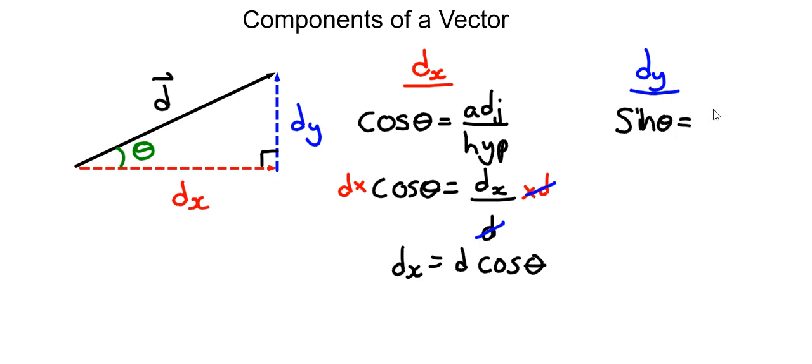So sine theta is equal to opposite over hypotenuse. And so we can rewrite, just like we did over on the other example, we can rewrite the opposite side as DY, and the hypotenuse as vector D. So sine theta is equal to the ratio of DY to D.